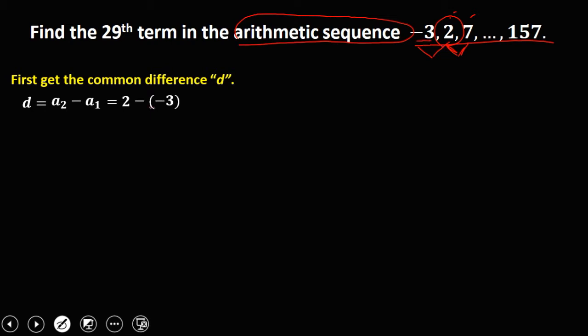Now, since this one is double negative and that becomes positive, we have now 2 plus 3. Therefore, the common difference is 5.